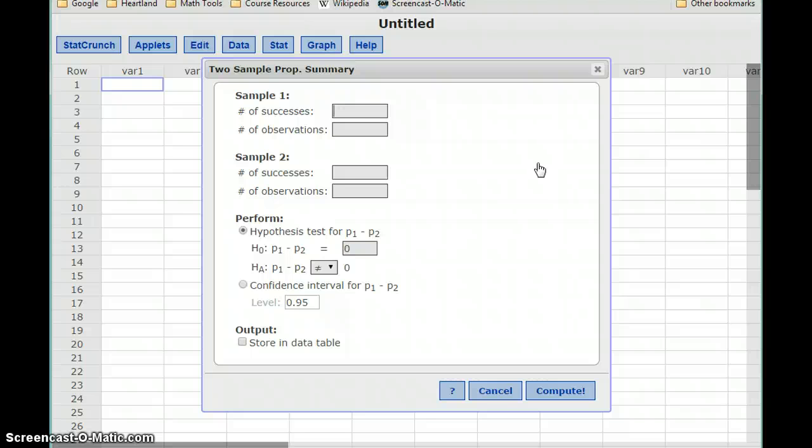So the number of successes in our first sample was 1,798 out of 28,534 observations. In sample 2, we had 1,141 successes out of 28,534 observations. We're going to select confidence interval for P1 minus P2, and we'll set our confidence level to 0.99, or 99%.